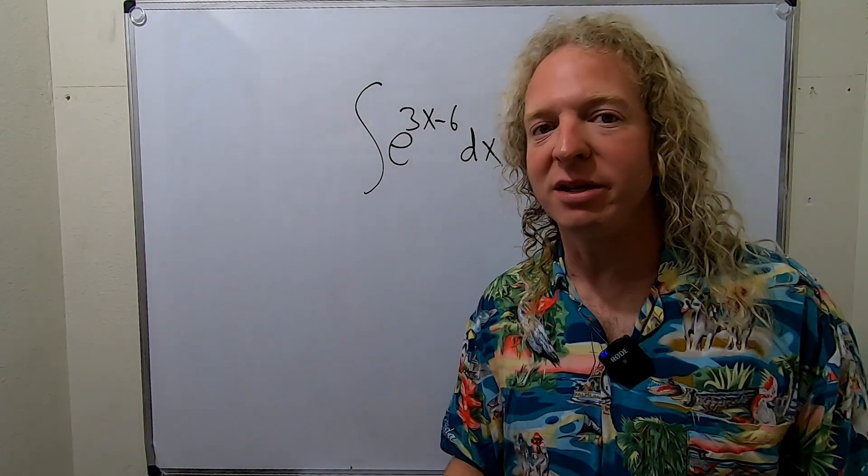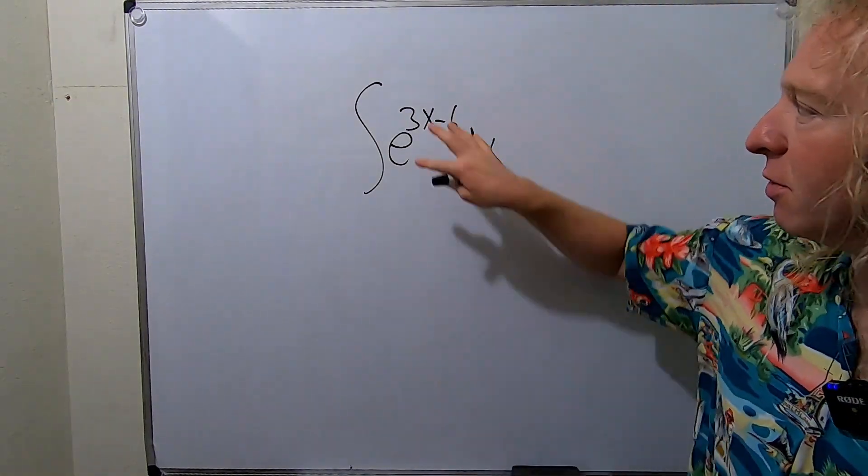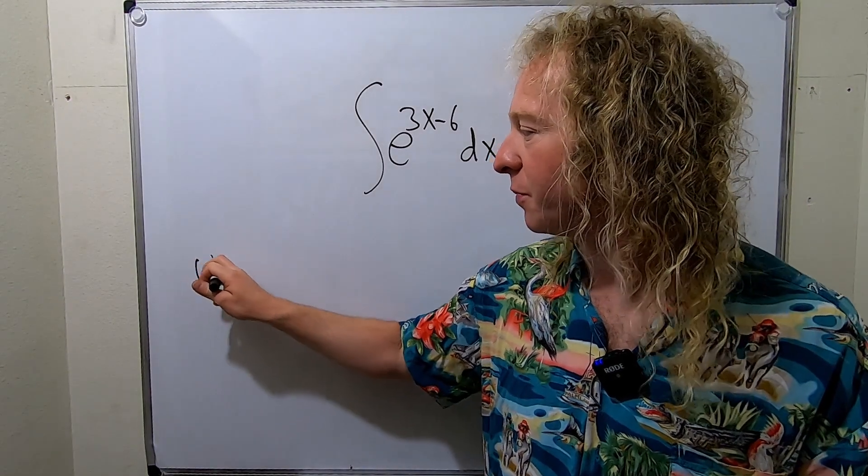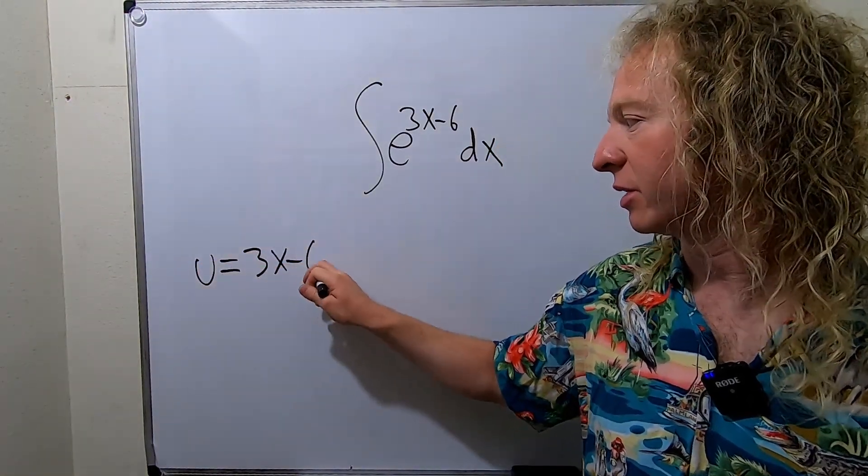So the natural thing to try is to make a u substitution. We'll start by letting u be equal to 3x minus 6.